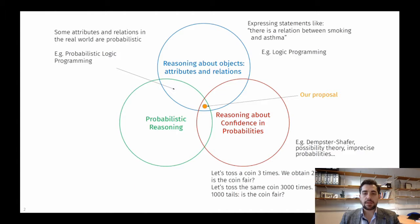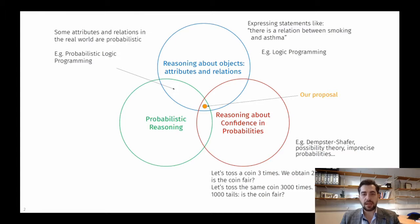However, just having probabilities might not be enough. Sometimes we need to reason about the confidence we have in those probabilities. Suppose we are tossing a coin three times and obtain two heads and one tail — we can't conclude whether the coin is fair or not. But if we toss the same coin three thousand times and obtain two thousand heads and one thousand tails, then we have a quite strong argument that the coin is not fair.